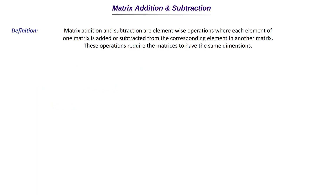First is matrix addition and subtraction. Matrix addition and subtraction are element-wise operations where each element of one matrix is added or subtracted from the corresponding element in another matrix. These operations require the matrices to have the same dimensions — the same number of rows and the same number of columns. These are the two important aspects.